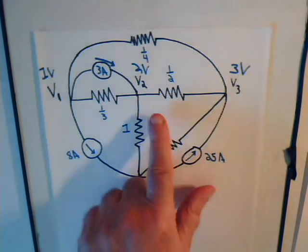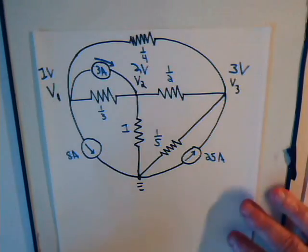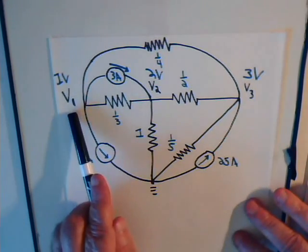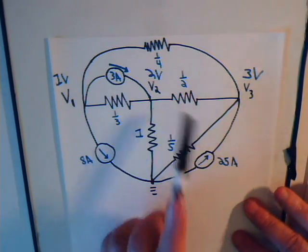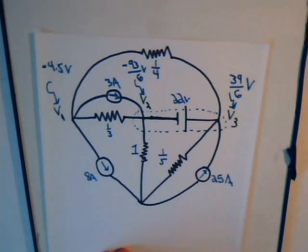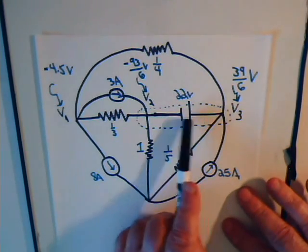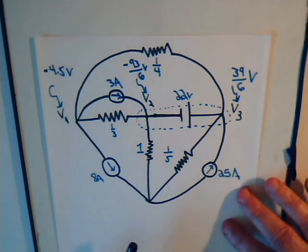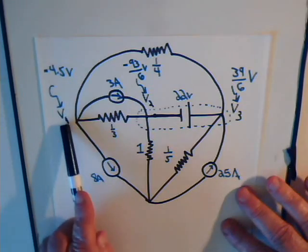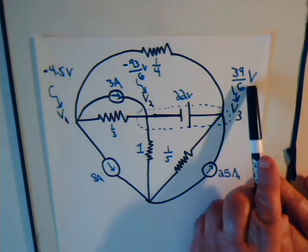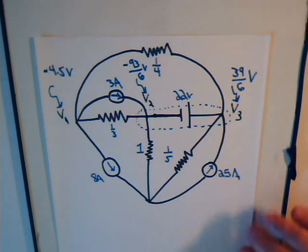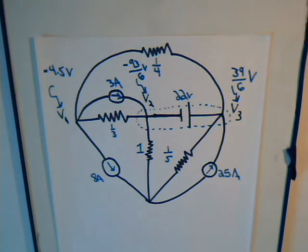In our original circuit we had a resistor here and we were at nodal voltages of 1 volt, 2 volts, 3 volts. Now we replace that with this voltage source and now we have negative 4 and a half volts, minus 93 over 6 volts, and plus 39 over 6 volts.